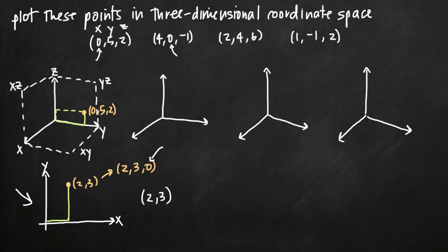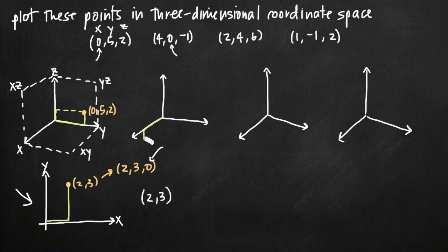Now let's look at (4,0,-1). I come out a distance along the x-axis of four. The y-value is zero, so I'm going to stick here along my x-axis rather than moving parallel to the y-axis. Then I move a distance of negative one along the z-axis — when the z-value is negative, I move down parallel to the z-axis a distance of one. There's my point (4,0,-1). Because it lies in the x, z coordinate plane, I can draw a rectangle here that illustrates that plane and shows where my point is.